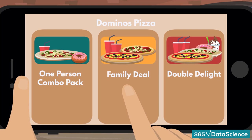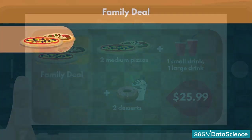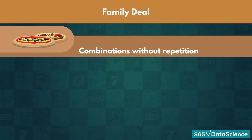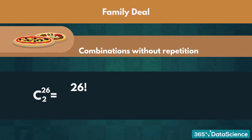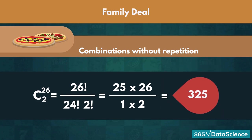You examine the family deal: it includes 2 pizzas, a small drink, a large drink, and 2 desserts for $25.99. You decided to get different pizzas to get the most out of your deal. Since you are splitting the two among one another, no order is involved – you use combinations without repetition. Applying the formula: 26! / (24! × 2!) simplifies to (25 × 26) / (1 × 2) = 325. There are 325 different ways of picking the pizzas. That is a much greater variety than the 26 available earlier.